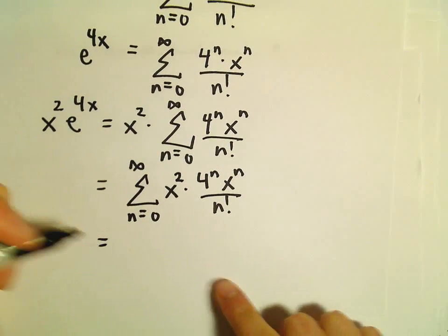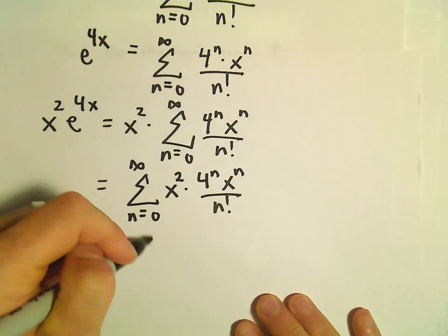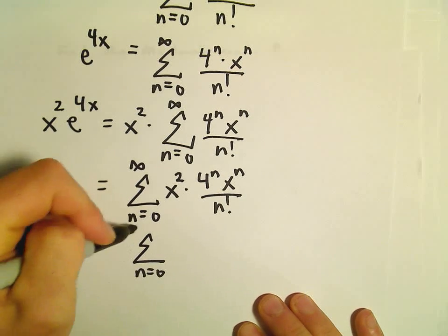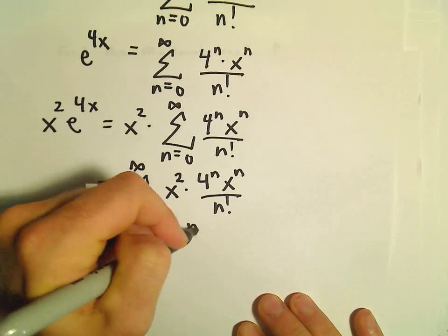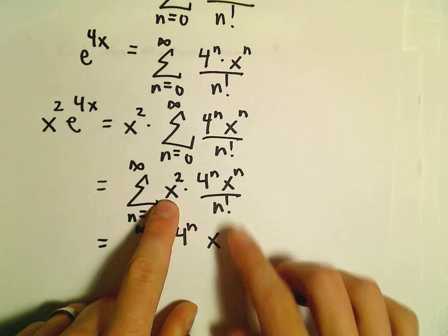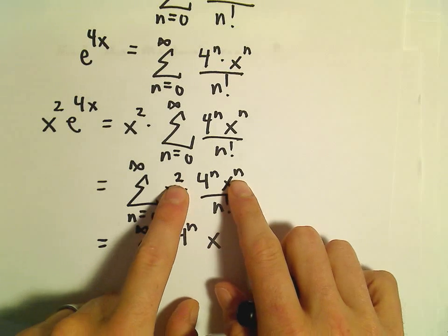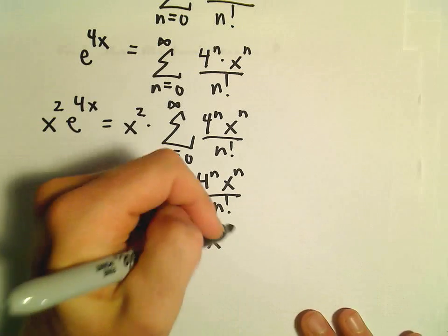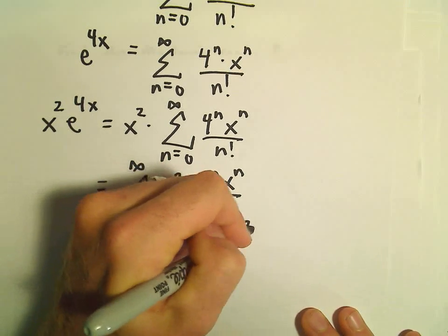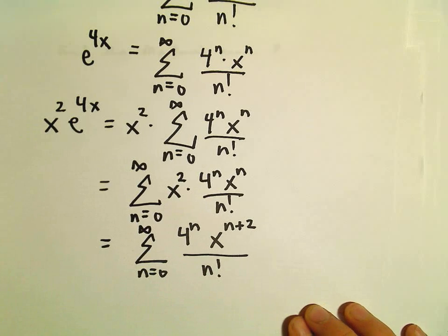Well, we've got like bases, we've got x to powers, so we can condense those. So we would have 4 to the n. If I take x squared times x to the n, we've got like bases, so we would add the exponents. So I'm going to write that as n plus 2 all over n factorial.